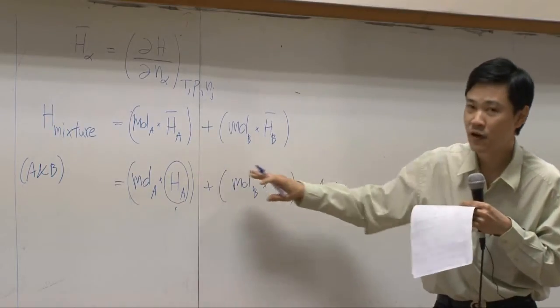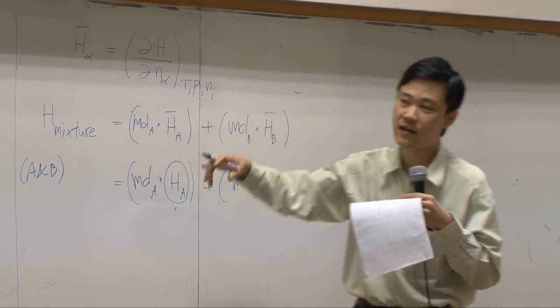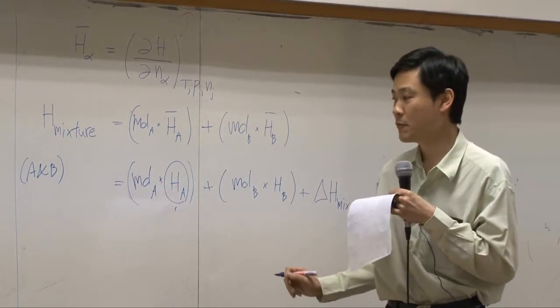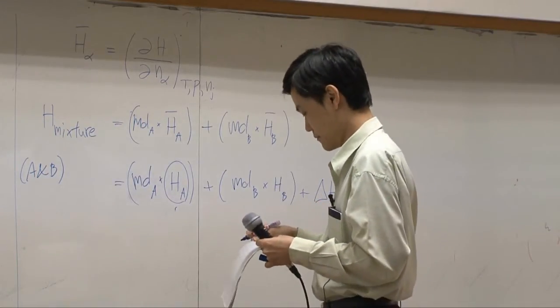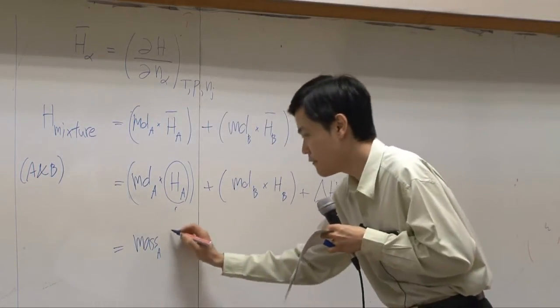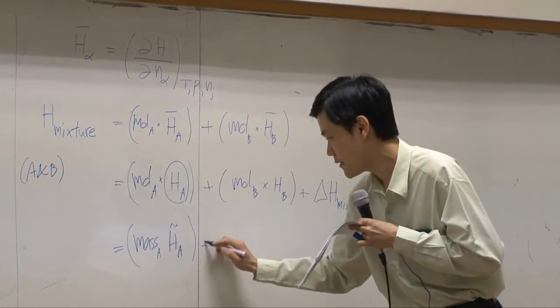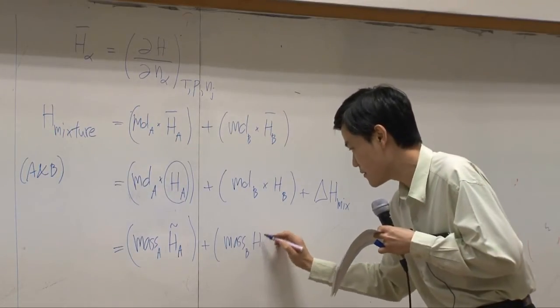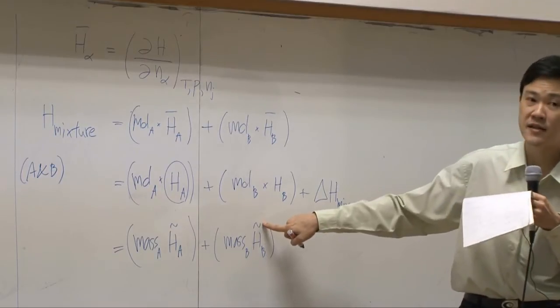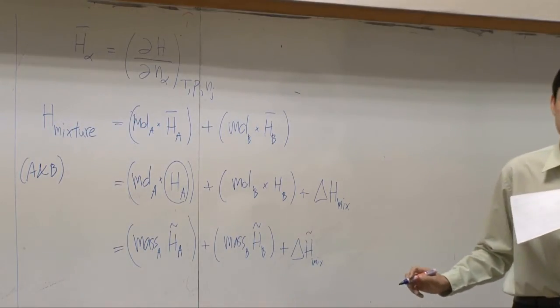But now this equation you learn from thermodynamics. In our case, in this particular equation here we use mass flux. We prefer at this moment not using mole, we will prefer to use mass. So if you use mass of A we will use specific enthalpy of A instead of molar enthalpy, plus mass, specific enthalpy. This mark gives you identifying that this is specific enthalpy plus delta H of mixing. Of course this one's supposed to be changed somehow to get mass basis.